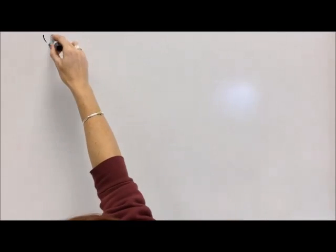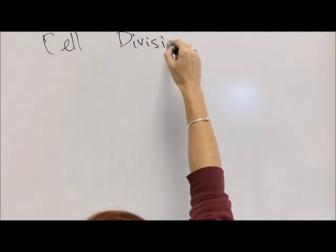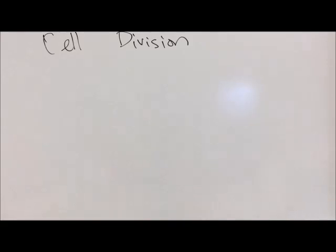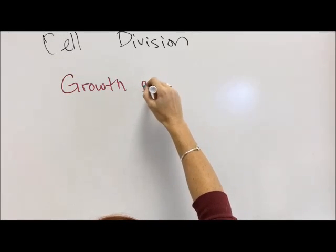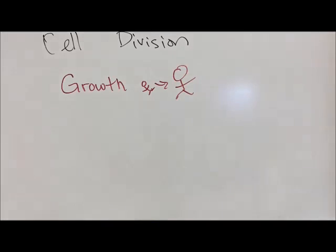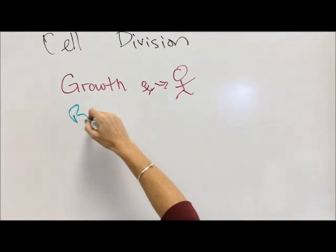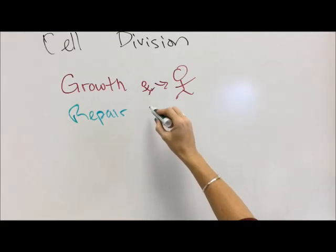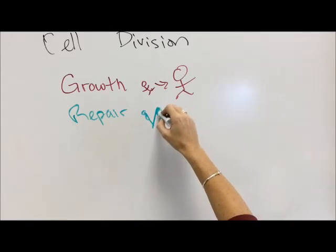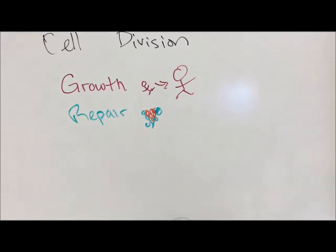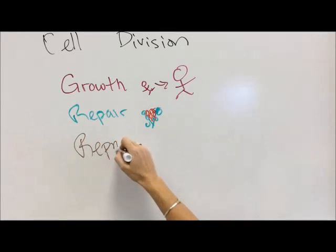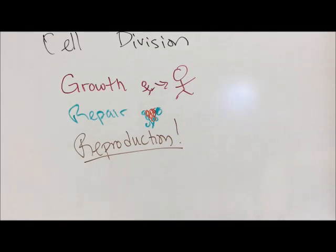Once upon a time, we talked about cell division. We talked about mitosis — cell division for the purposes of growth, because in order to grow you have to get more cells in your body. For repair, because in order to repair injuries like cuts and broken bones, you have to fill in all of that with new cells through mitosis. But today we're going to talk about the one that we didn't get to so much, and that is cell division for the purposes of reproduction.